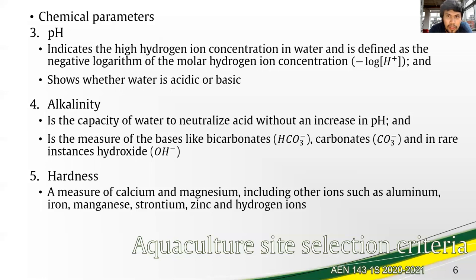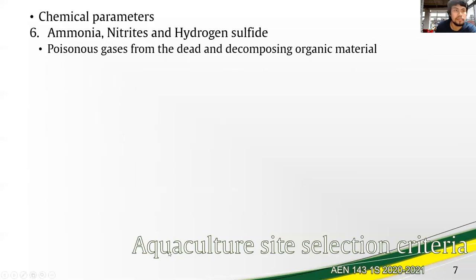Hardness, fifth, is a measure of the calcium and magnesium content of the water, including other trace ions such as aluminum, iron, manganese, strontium, zinc, and even hydrogen ions. Last among the chemical parameters are ammonia, nitrites, and hydrogen sulfide, which are poisonous gases from dead and decomposing organic material.